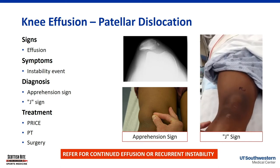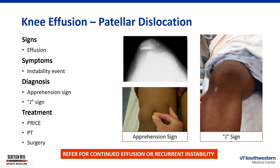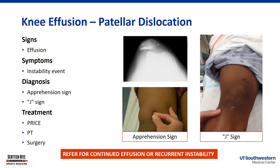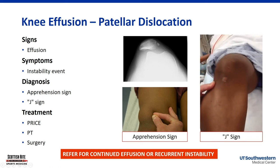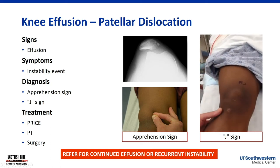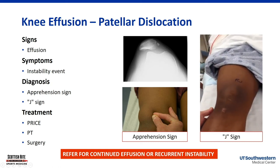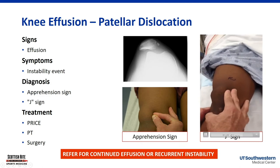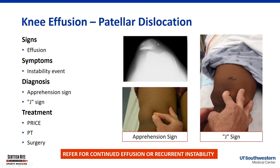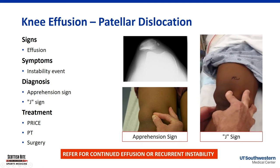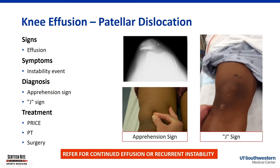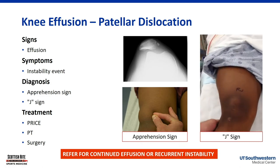If kids have had a patellar dislocation, you may see a little avulsion fracture where the ligament pulled off the inner side of the kneecap. They've got an apprehension sign, they've got a J sign — refer those to us if they have all of those signs, and we're happy to see those anytime.